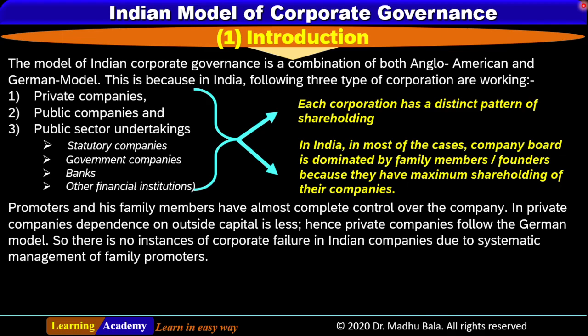Because in Indian companies, the promoters and family members have complete control over the company as they have maximum shareholding. For private companies, dependence on outside capital is very low because internal sources arrange capital. In Indian companies, instances of corporate failure are very low because family promoters systematically manage their business. Being the major shareholders, whatever profit the organization earns, they are motivated to run their business successfully to earn maximum returns.